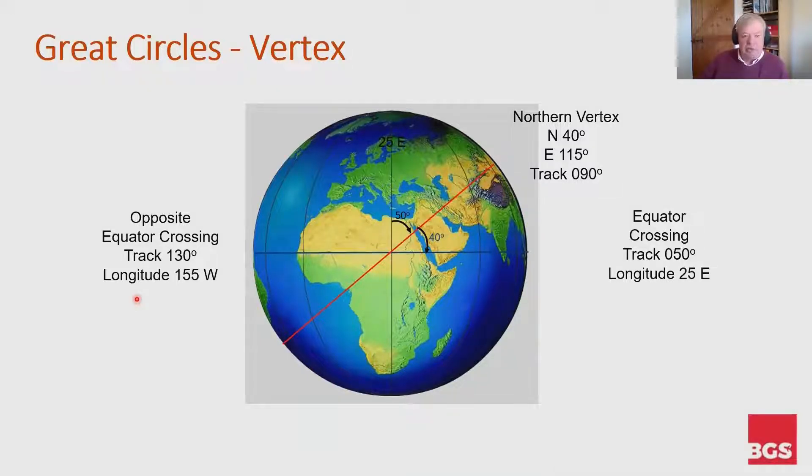We're in the southern hemisphere now, so the southern vertex down here will still have a track of 090, and it will be 90 degrees further on from 155 west heading east, so 65 west. And then all the way around again across the equator at 25 east heading 050.